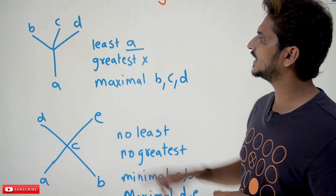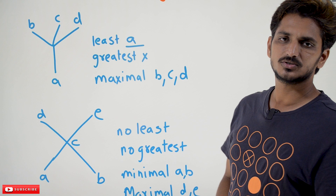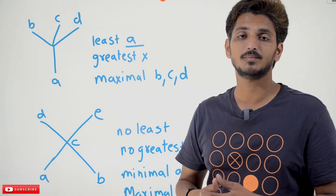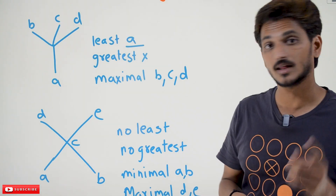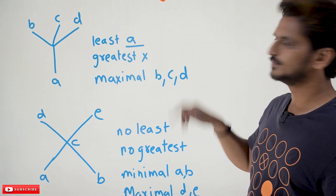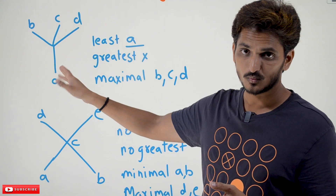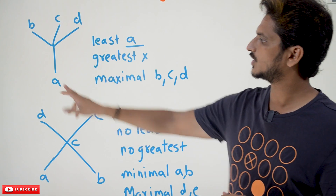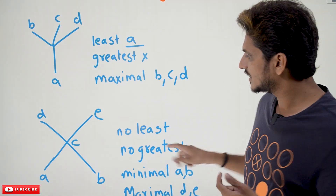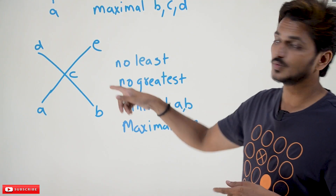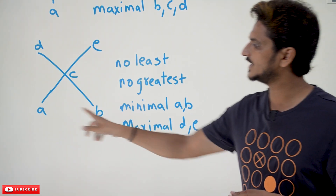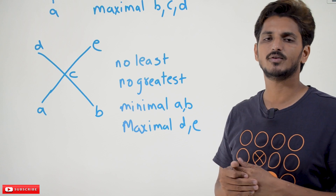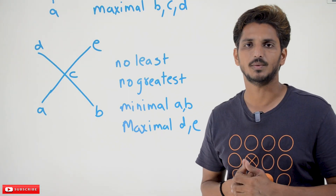Let's do some practice examples for better understanding. In this Hasse diagram, what is the least member? The least member is A. What is the greatest member? We do not have any greatest member here — we have maximal members: B, C, D are the maximal members. Do we have minimal members? No, we have only one element at the bottom, so we call it the least member. In the next example, we do not have a least member or greatest member. We have A, B as minimal members and D, E as maximal members. By looking at the diagram you can easily identify least, maximal, minimal, and greatest members.